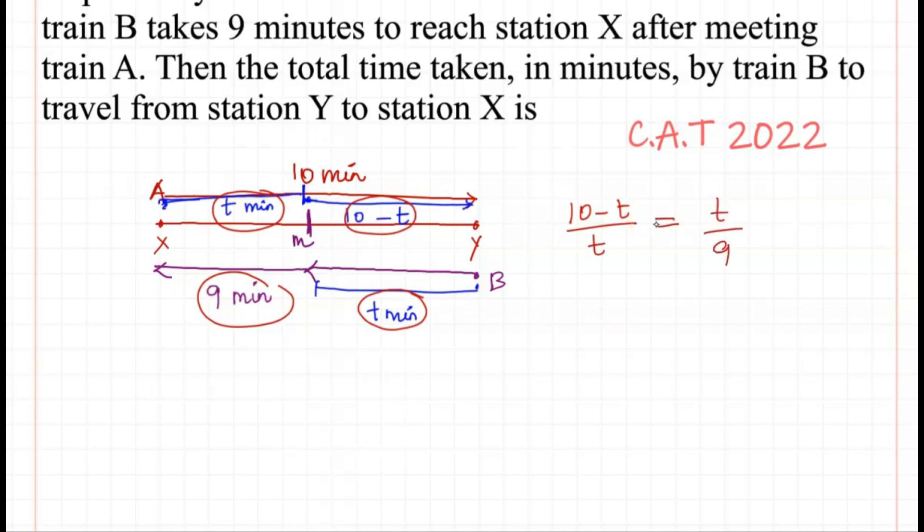Cross multiplying: 9(10-t) = t², which gives 90 - 9t = t².